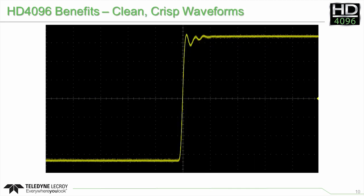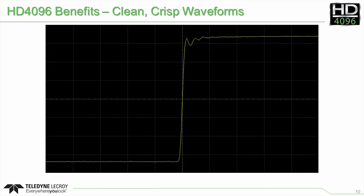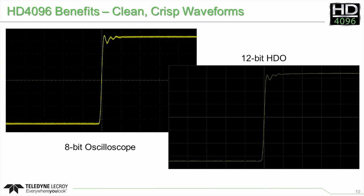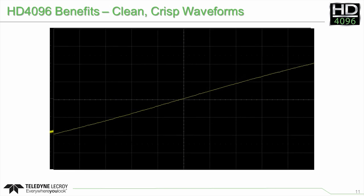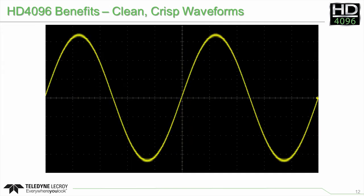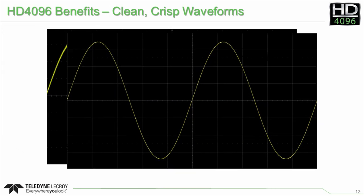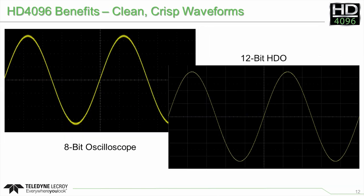The benefits of HD4096 technology can be clearly seen even when looking at the most basic waveforms. Here, a basic pulse was captured on an 8-bit oscilloscope, compared to the same pulse from an oscilloscope with 12-bit HD4096 technology — the waveforms are thinner, cleaner, and crisper. Here is a similar comparison with a simple ramp, first captured on an 8-bit oscilloscope, then on the 12-bit high-definition oscilloscope. Lastly, a sine wave was captured on an 8-bit oscilloscope and compared to the same sine wave captured on a 12-bit high-definition oscilloscope.